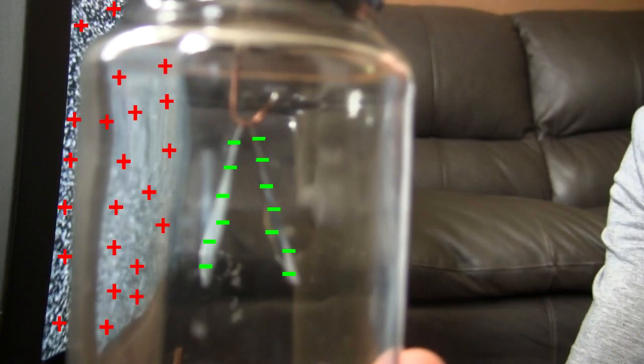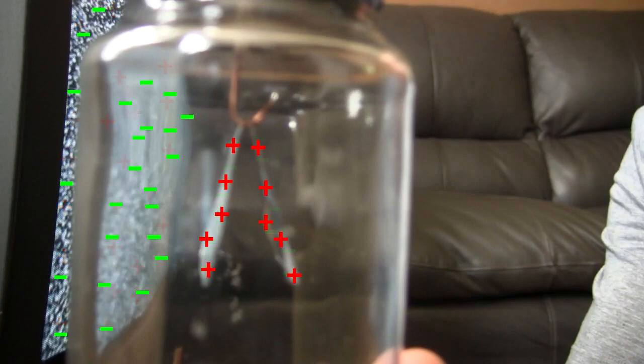If the charged object is positive then the electroscope is now negative. If the charged object is negative then the electroscope is now positive. But which one is it? We'll find out in the next step.